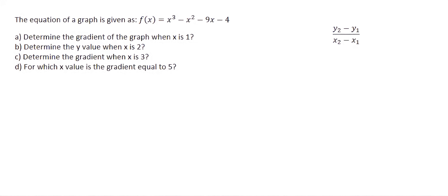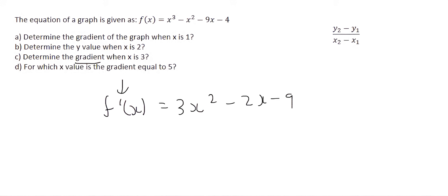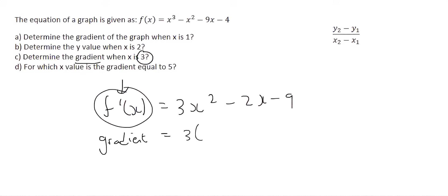Question C: determine the gradient — so that's the first derivative — when x is 3. We take the first derivative again, which we've already done, so it's 3x squared minus 2x minus 9. Now, don't make it equal to 0 — no one said it's 0. All they said is: work out the gradient when x is 3. We know that this means gradient, so gradient is equal to — we just replace x with 3 — and that gives us a value of 12. So the gradient on that graph has a value of 12 when the x value is 3.